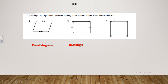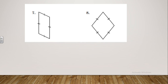Let's see number three. If you look carefully, you will see that the four sides are equal in length and there are four right angles. So that's a square.